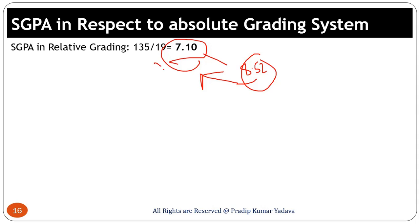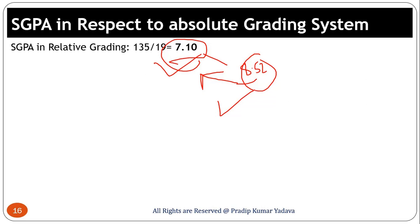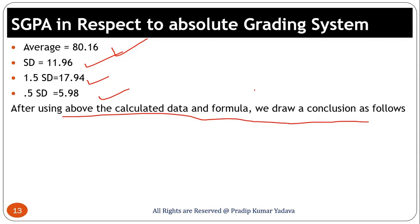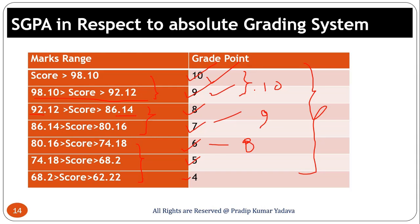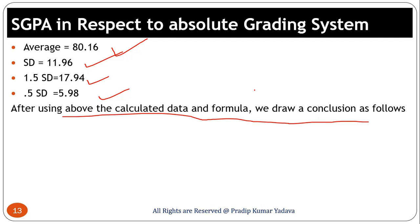As per the relative grading table, a mark of 91 gives grade A, 89 gives A, 76 gives B, and 56 is fail — whereas in absolute grading these would be O and A plus. The SGPA under relative grading is lower compared to 8.52 under absolute grading. That is why most universities follow the absolute grading system — it is easier to calculate. In relative grading you must find the average, then SD, then set parameters and compare results of other students, making it more complex. Thank you for watching.